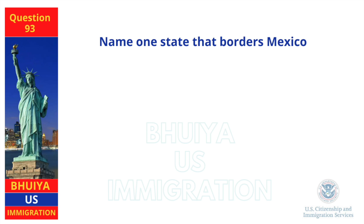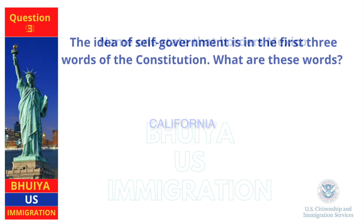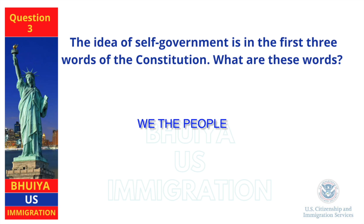Name one state that borders Mexico. California. The idea of self-government is in the first three words of the Constitution. What are these words? We the people.